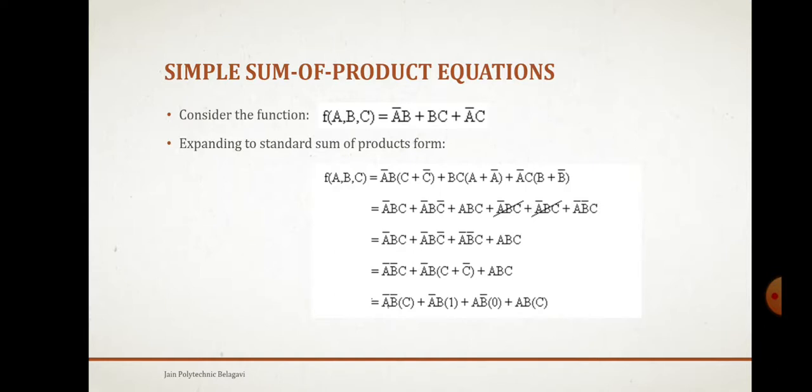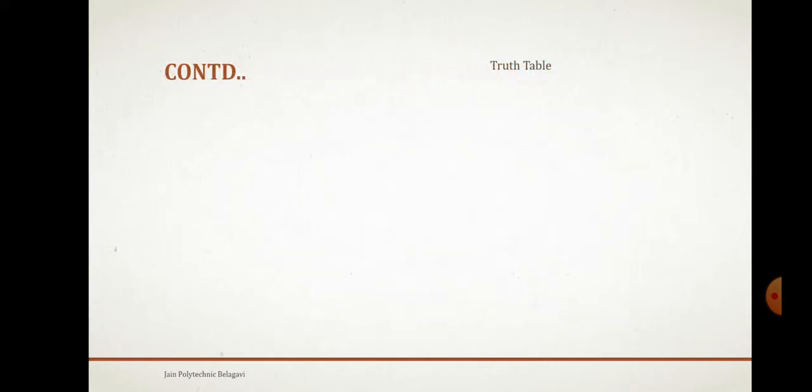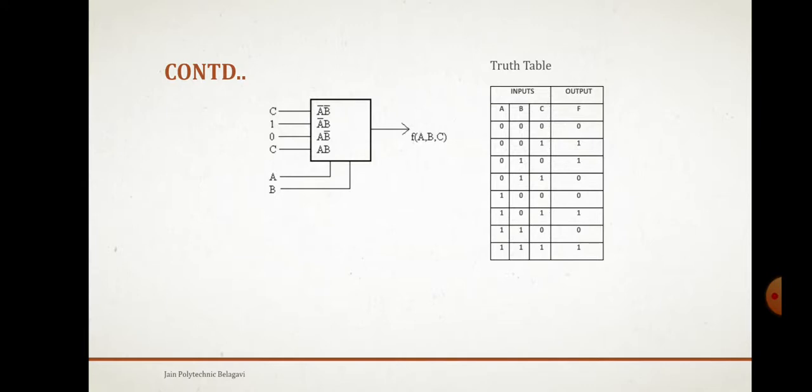This is a truth table I'm going to write for that expression. You can observe the logical circuit, the resulting implementation will get. A bar b bar, a bar b will be there, a b bar will be there and ab will be there, the values you are going to provide.